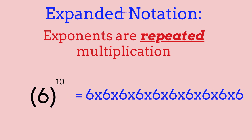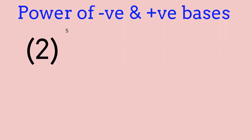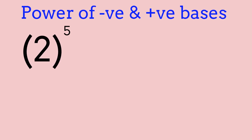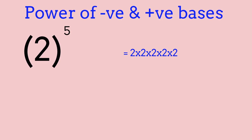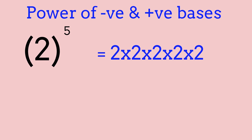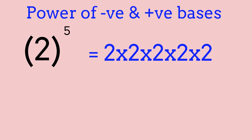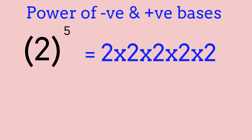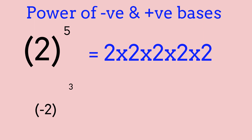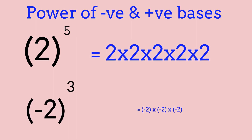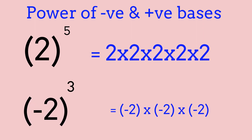Now we're going to be going over powers with positive and negative bases. Powers with positive bases are basically just what it sounds like — you have a positive base to a positive exponent. For example, 2 to the power of 5: all you have to do is 2 times 2 times 2 times 2 times 2, and our answer would be 32. With powers with negative bases, you're basically going to have a number inside of brackets with an exponent outside. For example, negative 2 to the power of 3: we do negative 2 times negative 2 times negative 2, which equals negative 8.